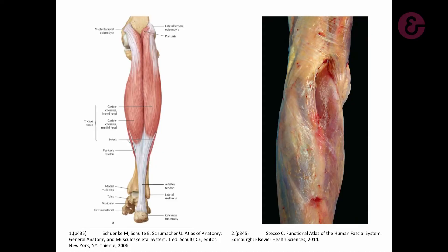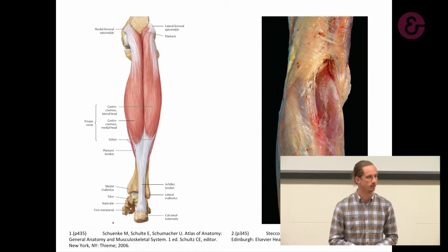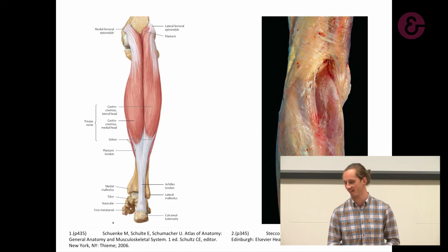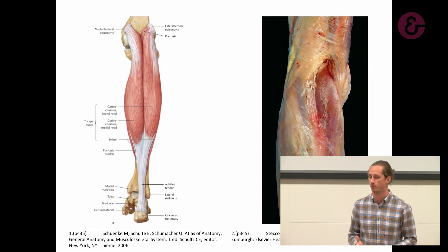I'd like to begin today by asking everyone to visualise what they think a muscle looks like. If you're like me and most people, I think you'll imagine something like the picture on the left — an origin, an insertion, a muscle belly — and that's generally how we're taught our anatomy. Most of you know that it tends to look a little bit more like the picture on the right. The difference is that the picture on the right has the fascia still in it, and the picture on the left is obviously a drawing, just a representation of the muscle tissues as we've been taught them.